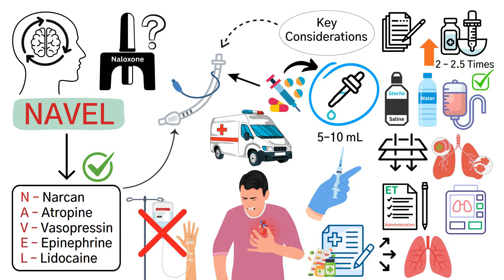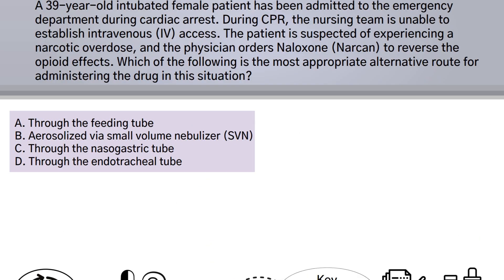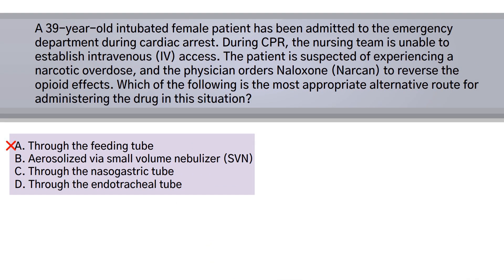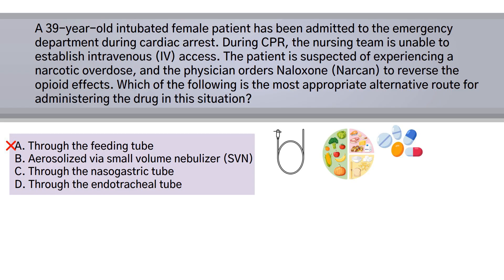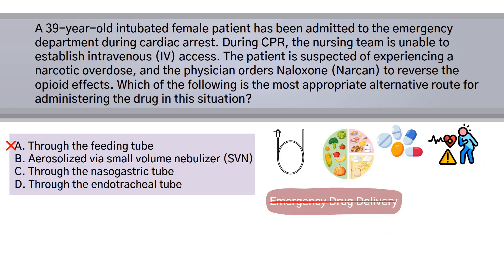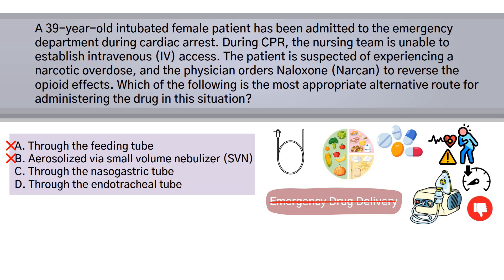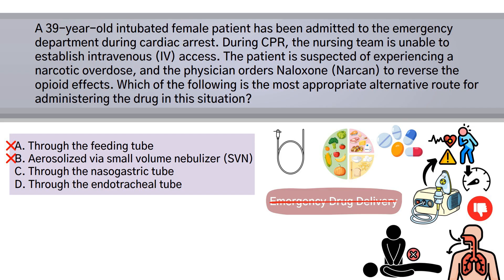Now let's break down why the other options are incorrect. Option A is incorrect because feeding tubes are intended for nutrition or enteral medications and are not suitable for emergency drug delivery, especially during cardiac arrest. Option B is also incorrect because small volume nebulizer delivery is too slow and unreliable in a cardiac arrest situation and requires spontaneous breathing, which is absent during CPR.